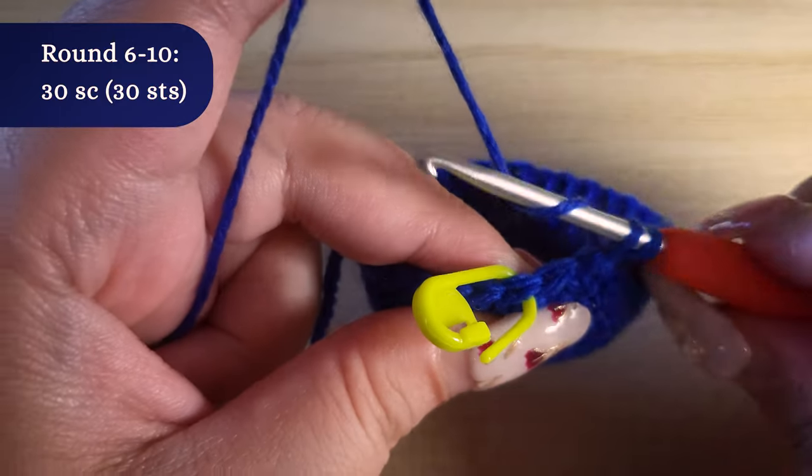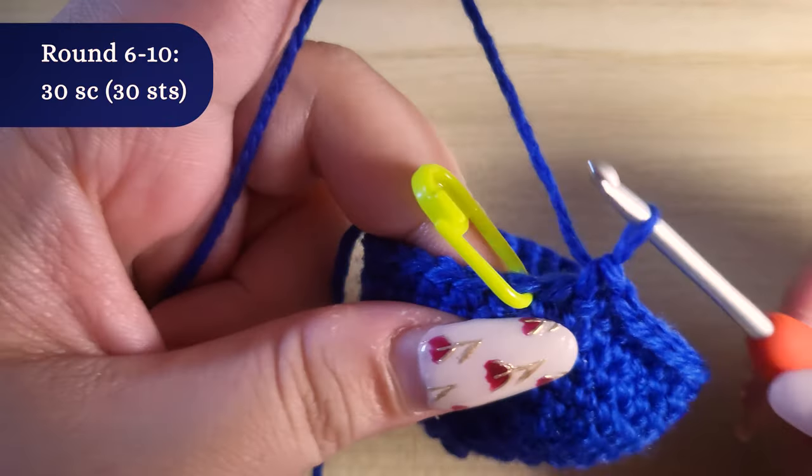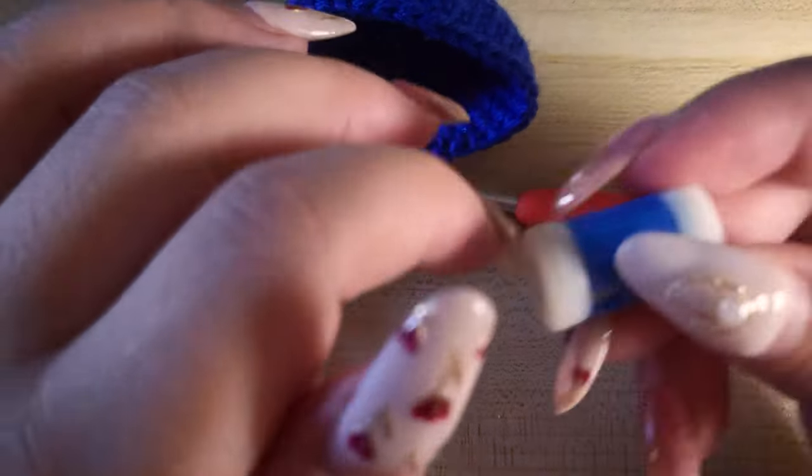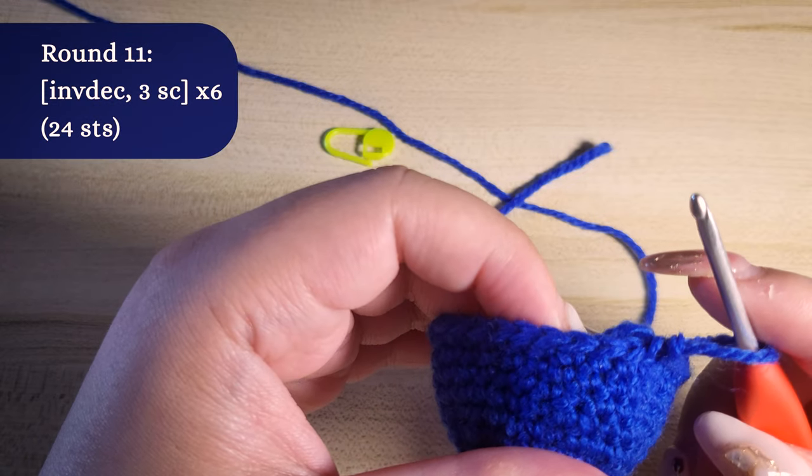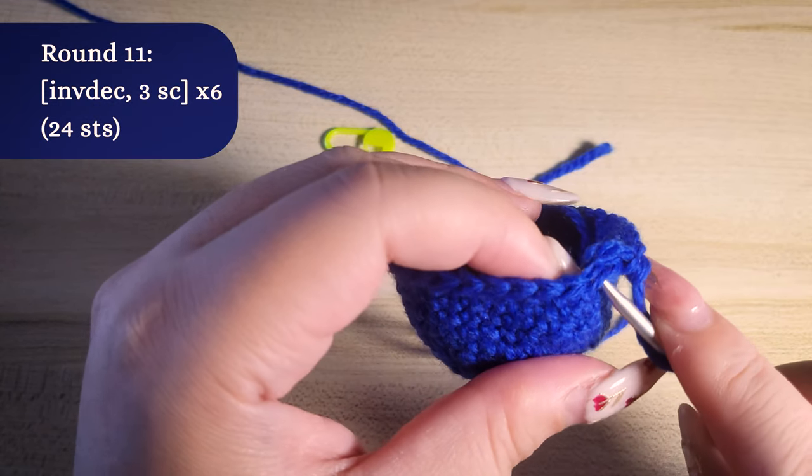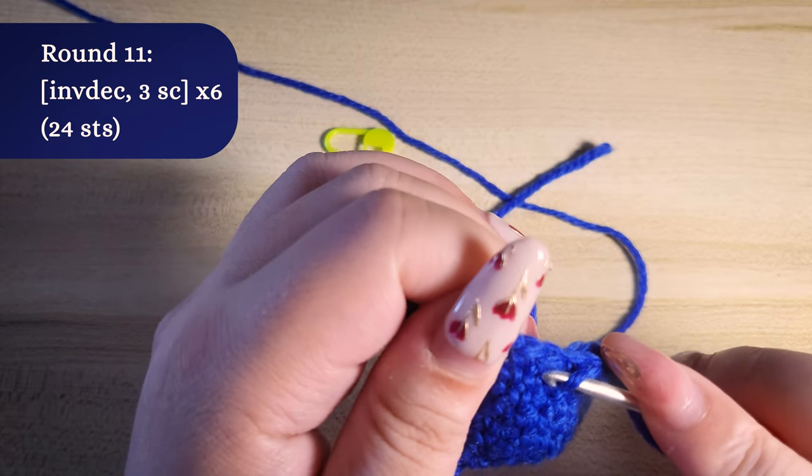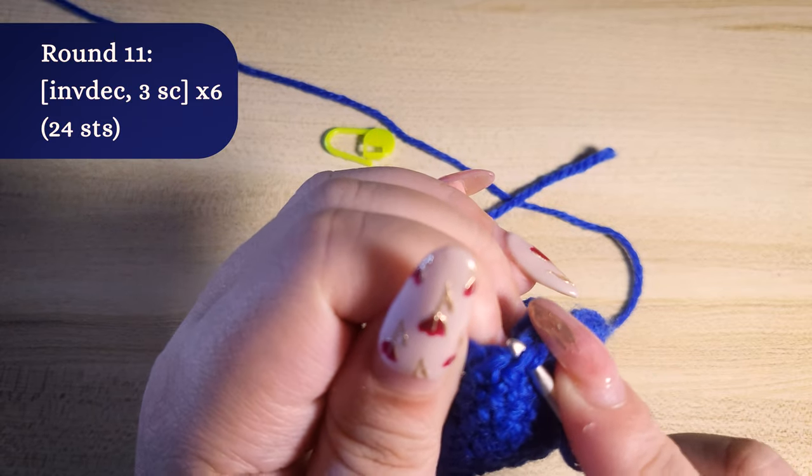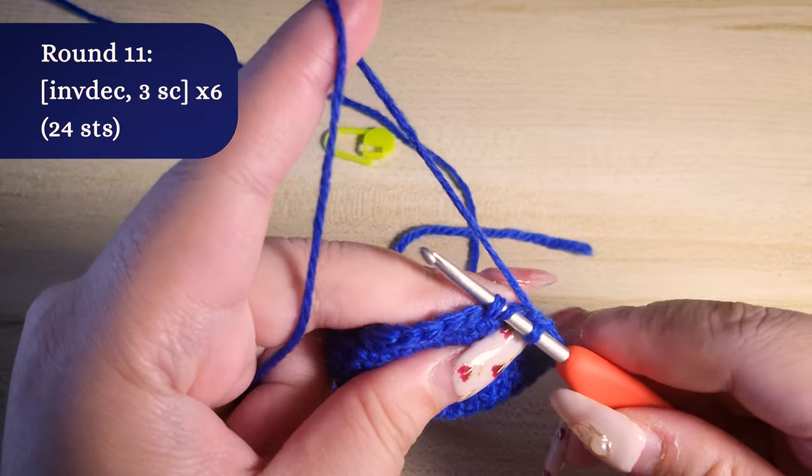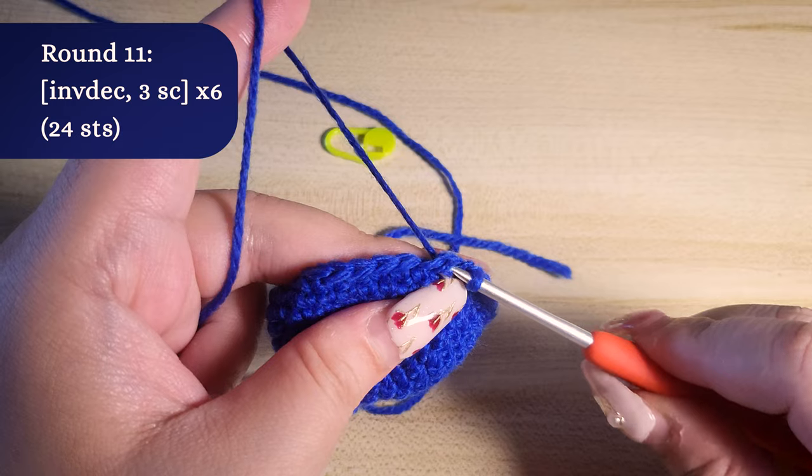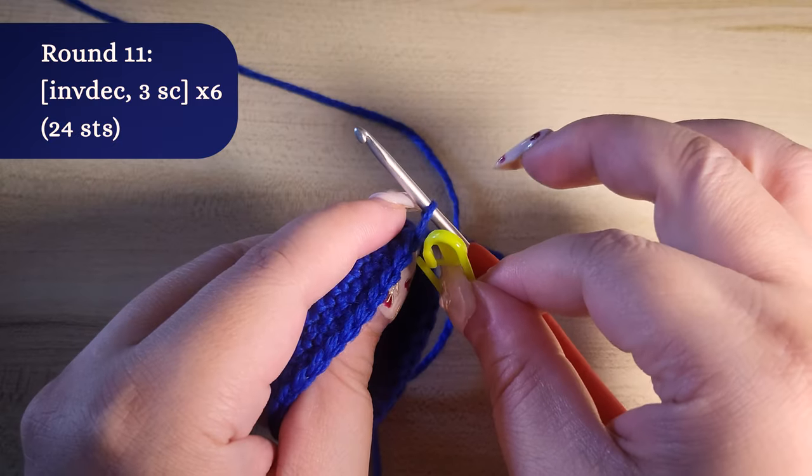We reached the end of round 10. Now for round 11, we'll be doing invisible decrease then three single crochet. We will be repeating this pattern six times in total. To do invisible decrease, insert your hook on the next stitch front loop only, then insert your hook on the next stitch of the front loop only again. Yarn over, pull through the first two stitches, then yarn over and pull through the remaining stitches.